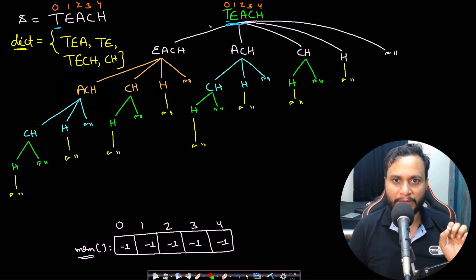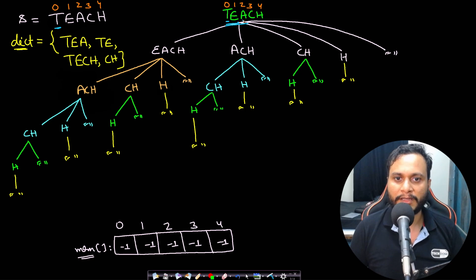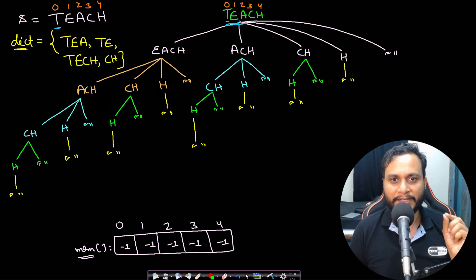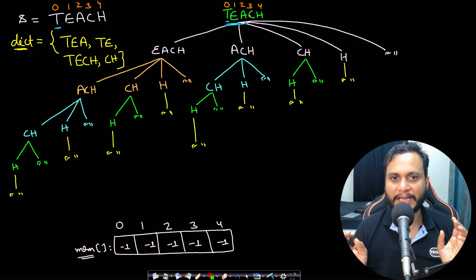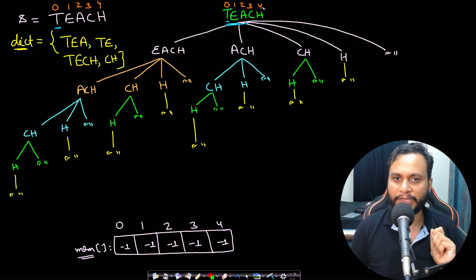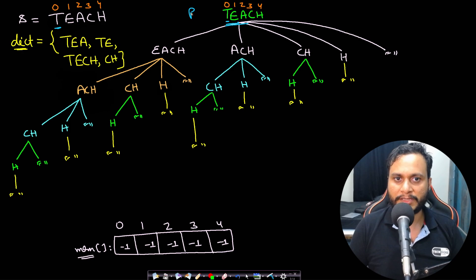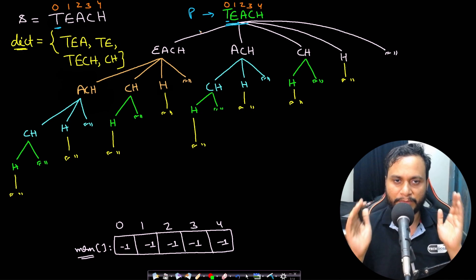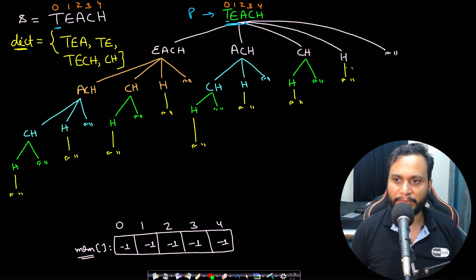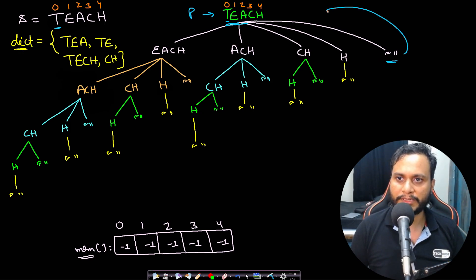Even if we remove the initial T, maybe the rest of the string gives the optimal answer. We are choosing each point as the partition point and creating smaller subproblems. This breaks the larger problem into smaller and smaller subproblems. Our base case is an empty string — if you have an empty string you have no residual characters, so it always returns 0.